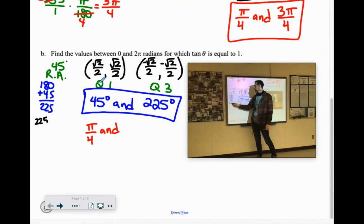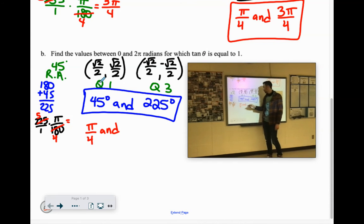225 over 1 times pi over 180, and let's see. 45 goes into 225 five times. 45 goes into 180 four times. So you're left with 5 pi over 4. There we go.